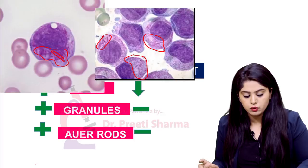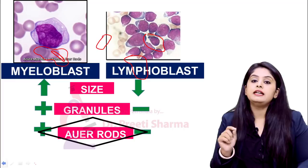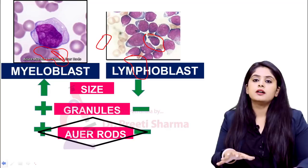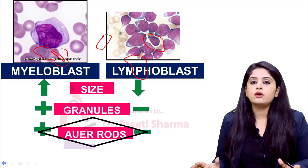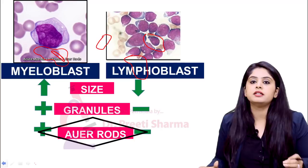Remember, Auer rods are the most characteristic finding. If you have to consider that one thing that will help you differentiate between a myeloblast and a lymphoblast, that one answer has to be an Auer rod. If an Auer rod is present, there is no way that cell can be a lymphoblast — it has to be a myeloblast.